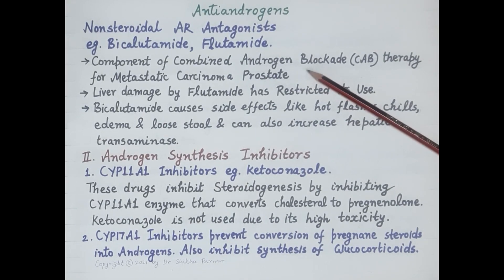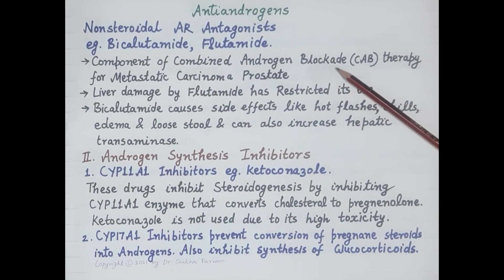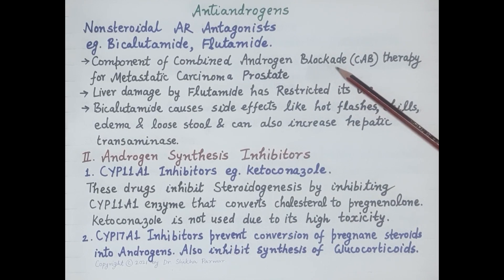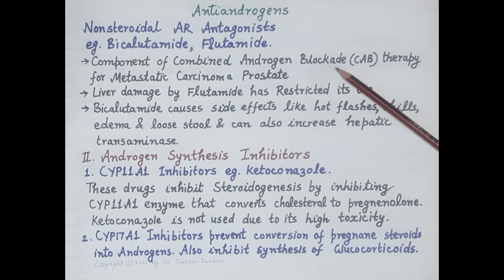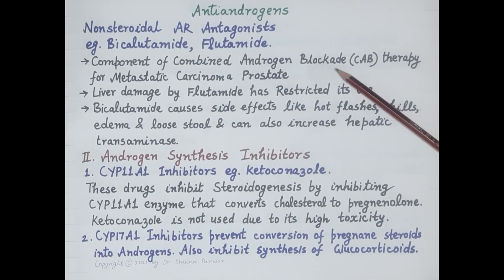The most commonly employed method for treatment of prostate cancer is to deprive the prostate cancer of androgens — that is, to deprive the prostate gland of testosterone as well as dihydrotestosterone. CAB therapy consists of gonadotropin releasing hormone modulators along with non-steroidal androgen receptor antagonists like bicalutamide, and this combined androgen blockade therapy is highly effective in the treatment of prostate cancer.